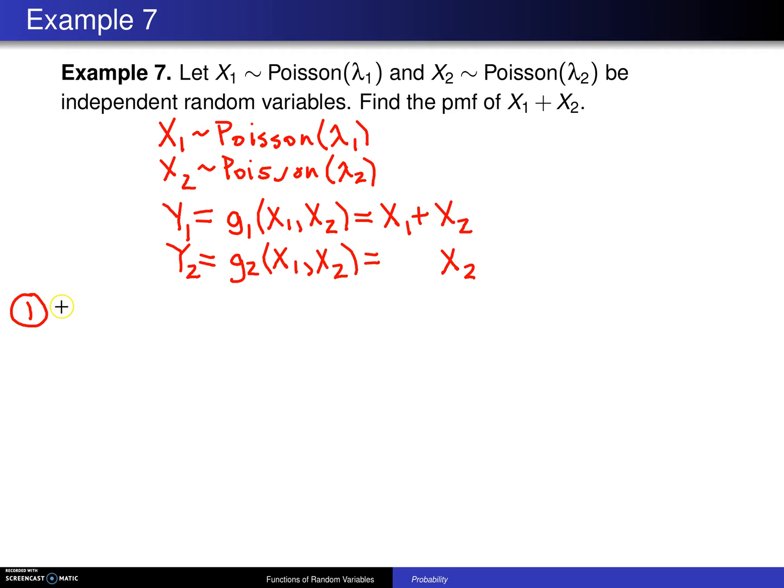We will now start into the six steps. Here they are. Step one is to determine the support of the X values, which is going to be script A. So in this case, X₁ and X₂ are Poisson random variables, and you know that the support of the Poisson distribution goes from 0 up to infinity. So you get this for the support of X₁ and you get this for the support of X₂, and that completes step one.